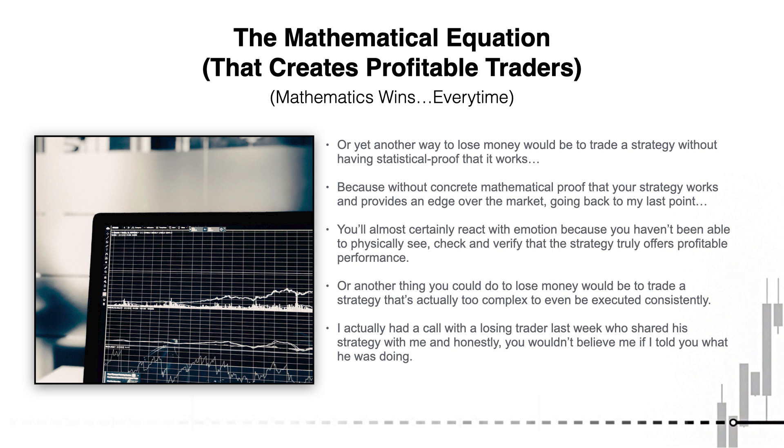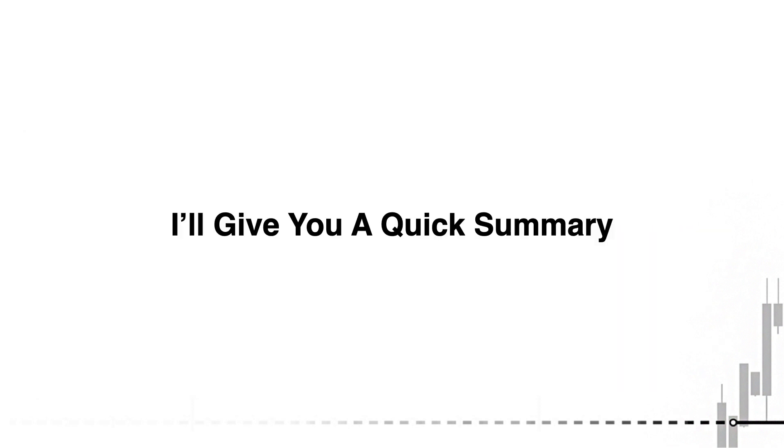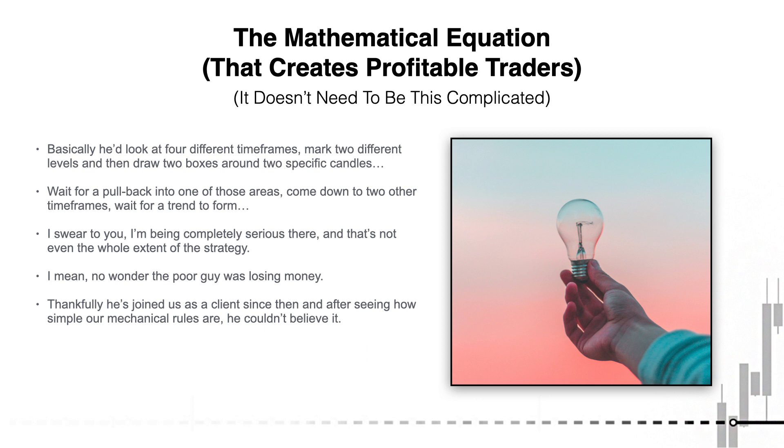Or another thing that you could do to lose money would be to trade a strategy that's actually just way too complex to even be executed properly, executed consistently. And I actually had a call with a struggling trader last week who shared his strategy with me. And honestly, you wouldn't believe me if I told you what he was actually doing. I'll give you a quick summary. But basically, he would look at four or five different timeframes all at once.